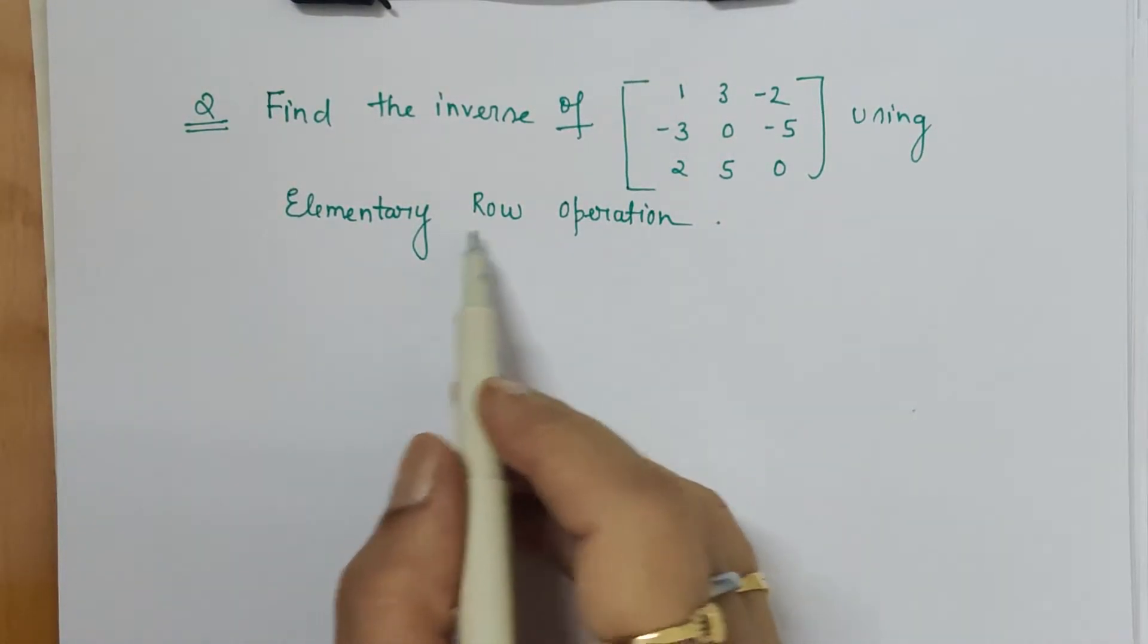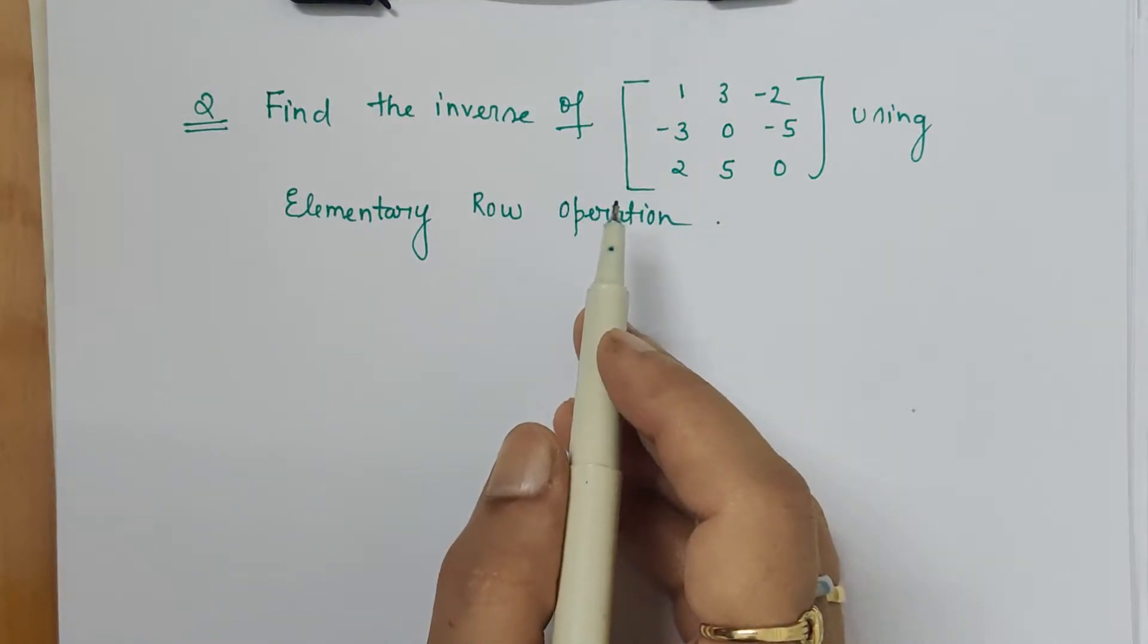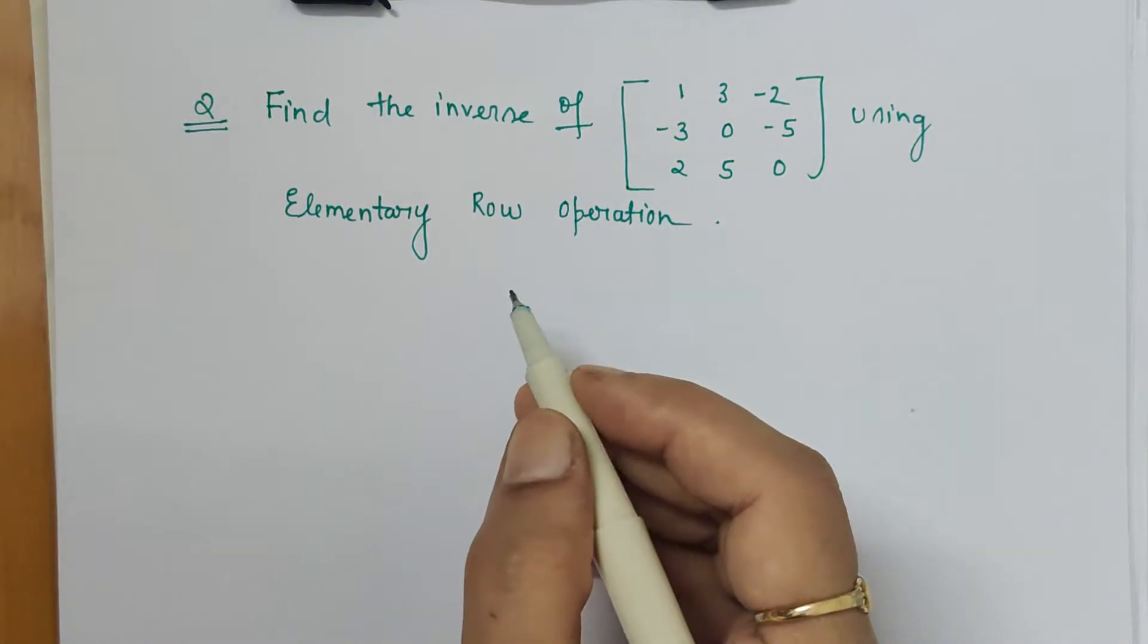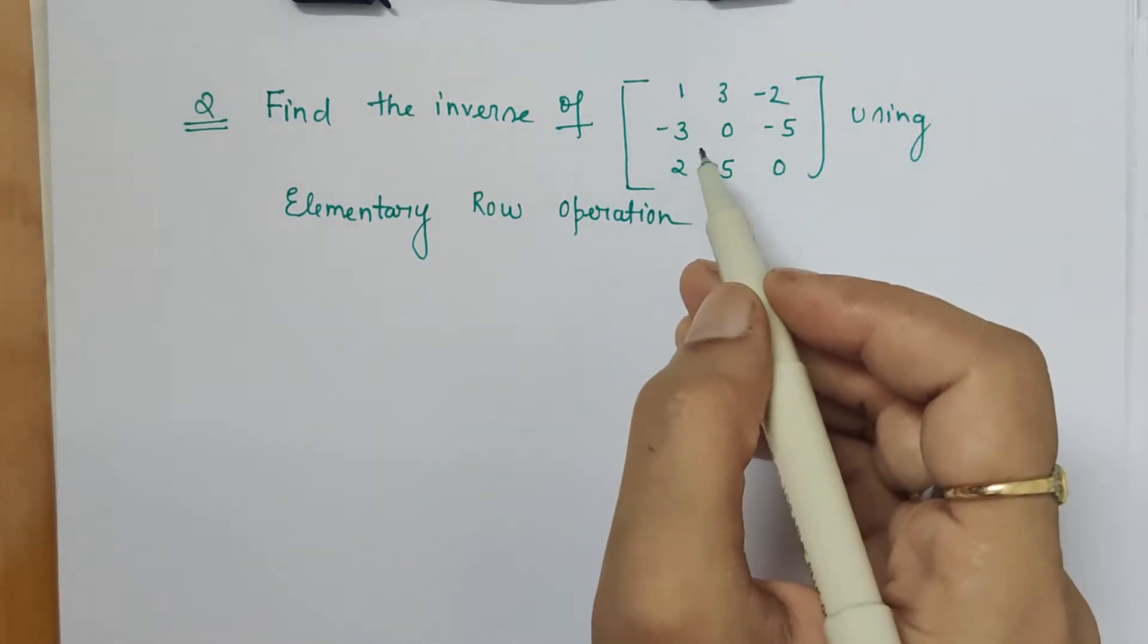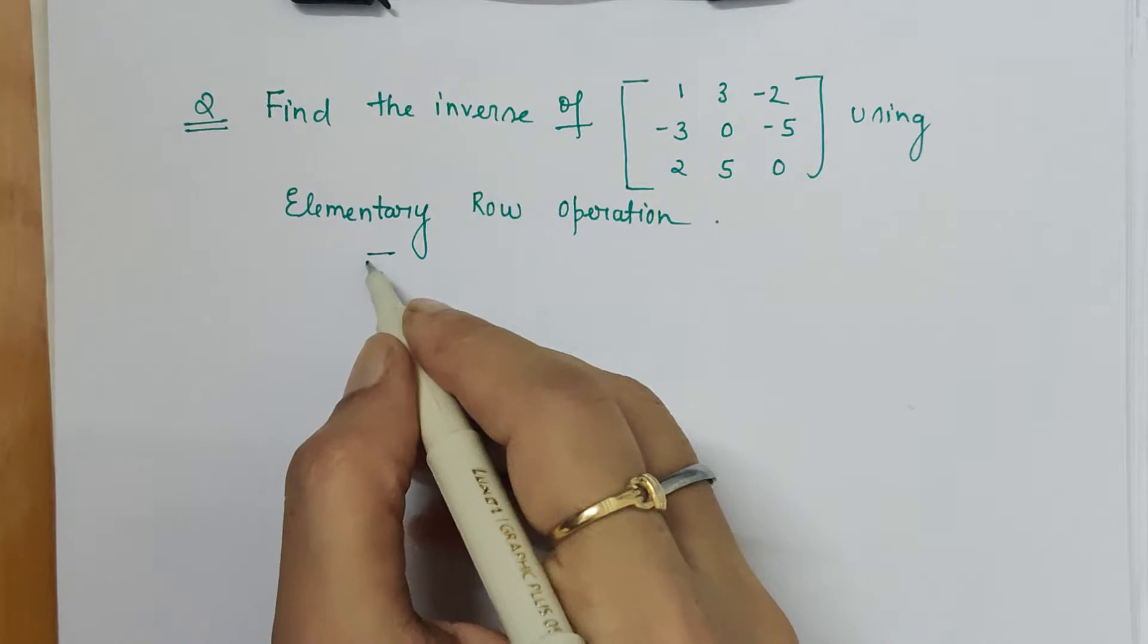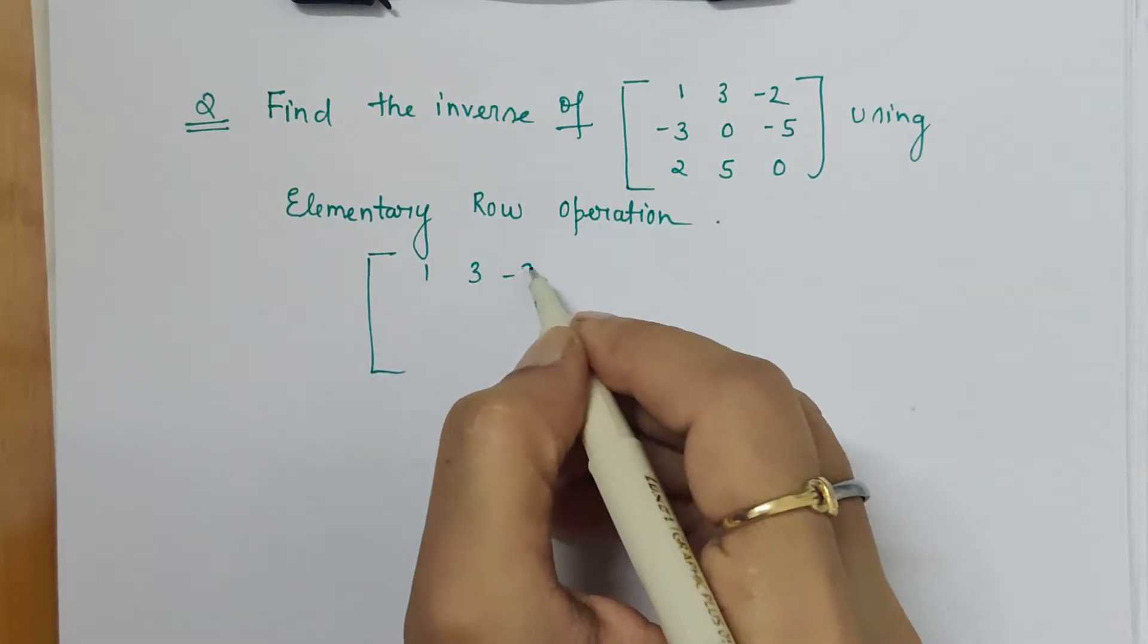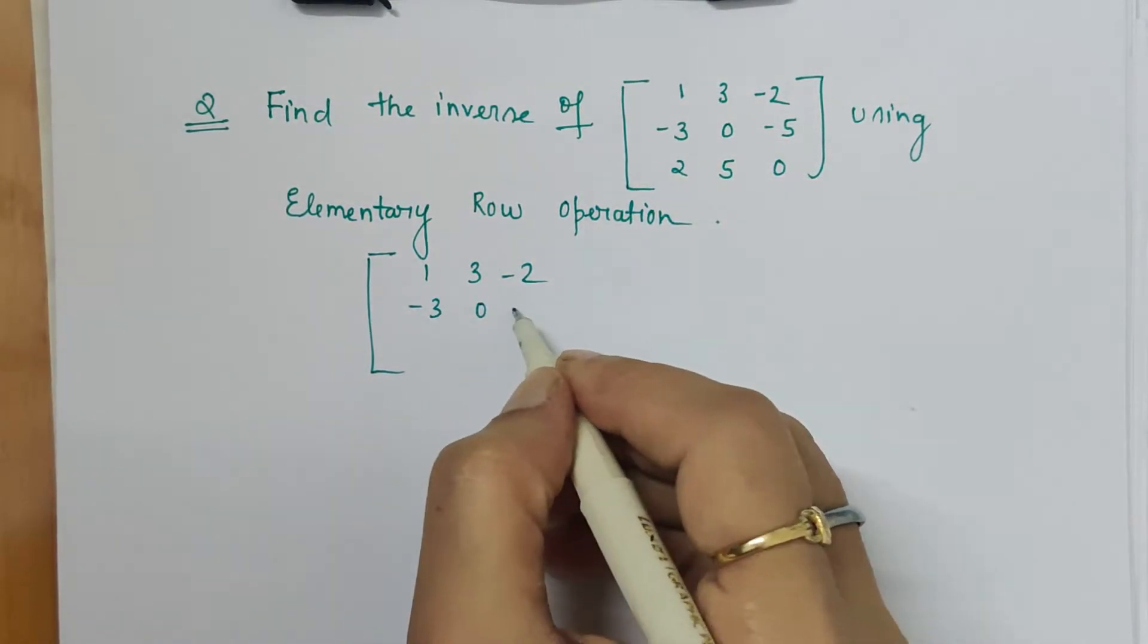Here I have specified elementary row operation. I will show how we can go systematically and in a very fast time. We will be writing the given matrix in the augmented matrix form first. Augmented matrix means the combination of two matrices.